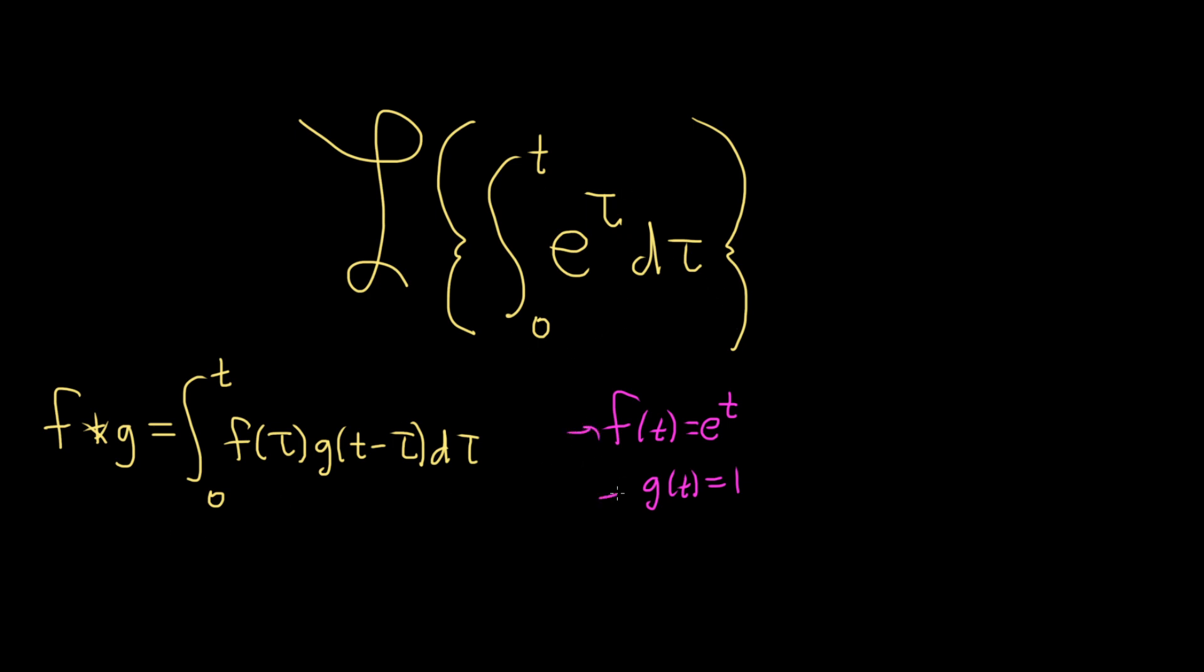If you take these two functions and plug them into this formula, if I do f and take the convolution with g, it'll be 0 to t. f of tau will be e to the tau. And then g of t minus tau, well, if you actually work that out, you're just going to get 1. So it's just 1, right? Because no matter what you plug in, you get 1 and then it's d tau. So it does match. These are the correct functions.